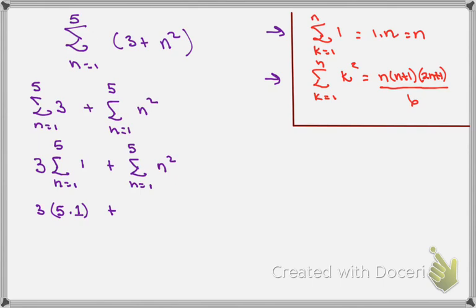So now that formula says that that should be equal to whatever this value is right here. So that's 5 times 5 plus 1 times 2 times 5 plus 1 all over 6.